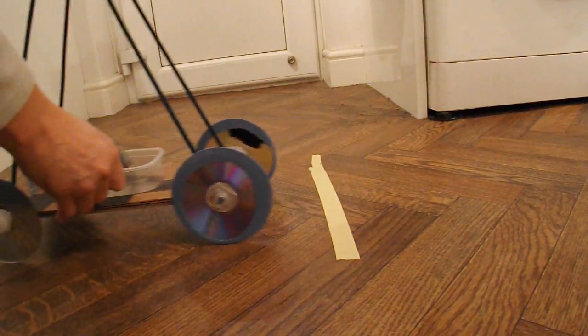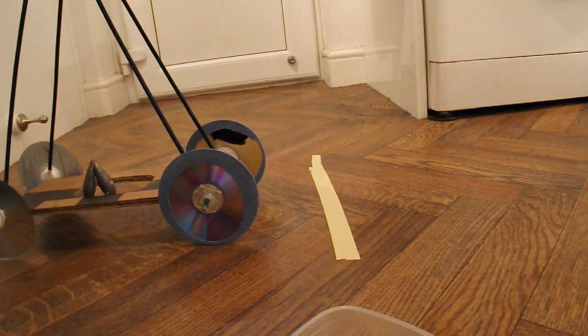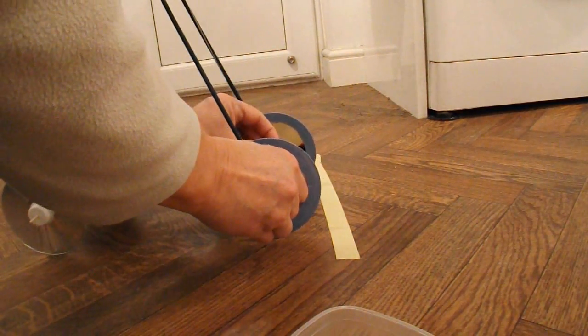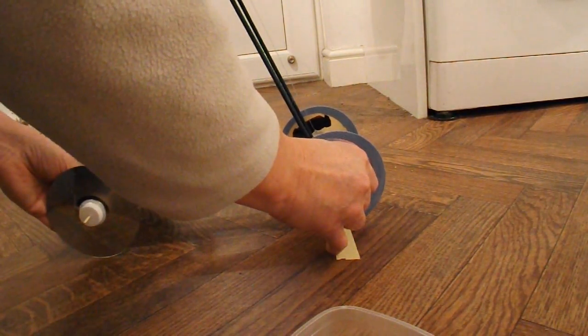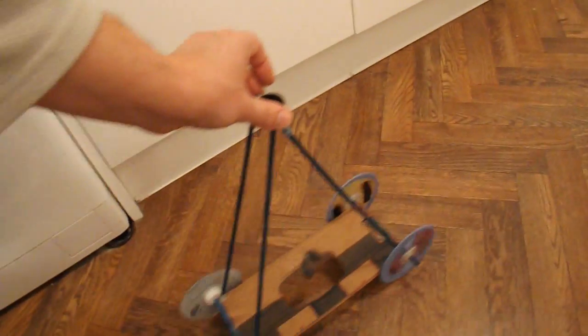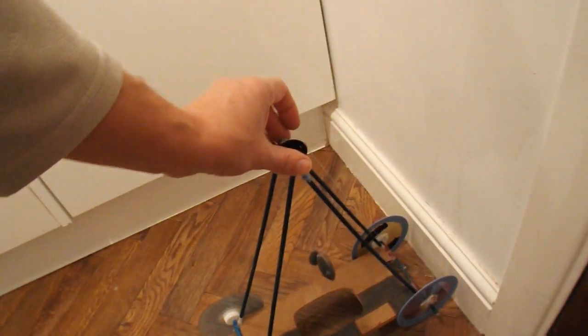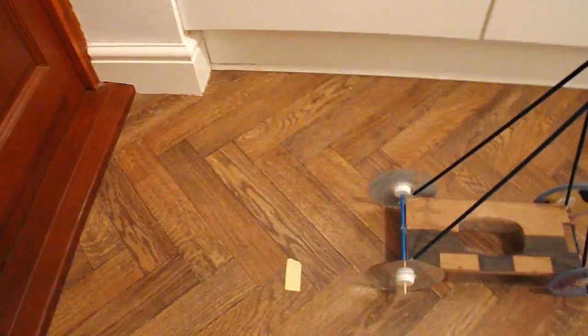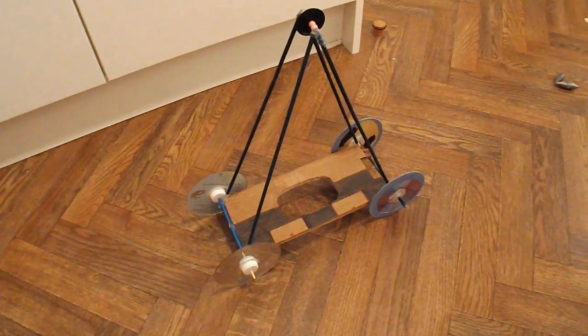Right then, this time, take the tray off. Fishing line over the pulley. Connect it to the back axle. Line it up with the plastic tape. Walk it backwards. Let it go. Well, that went further, didn't it? I'd better do a couple more runs, just to confirm.